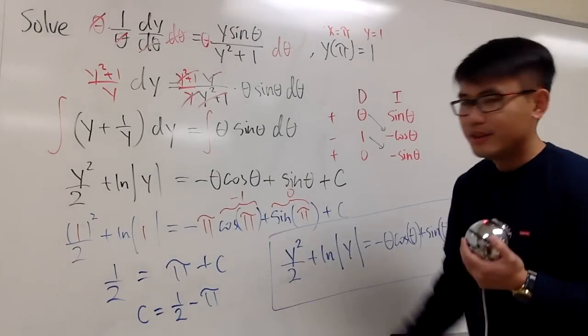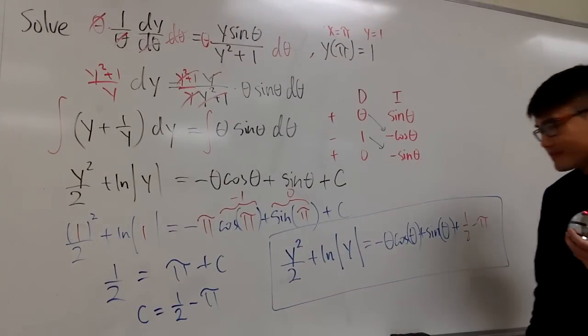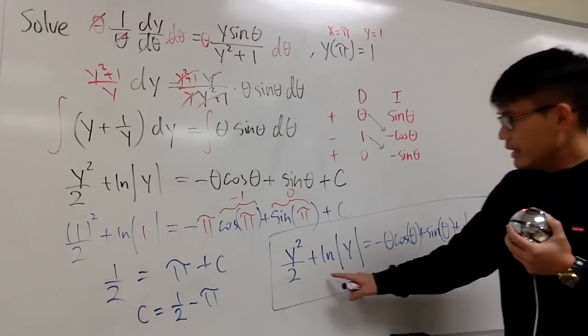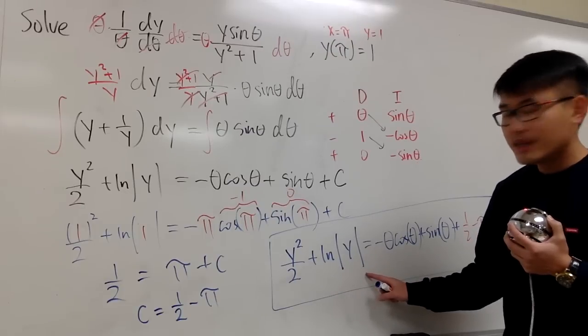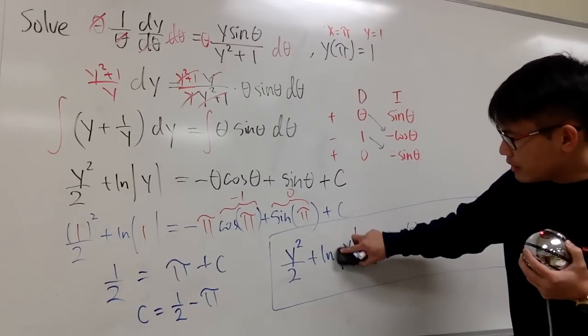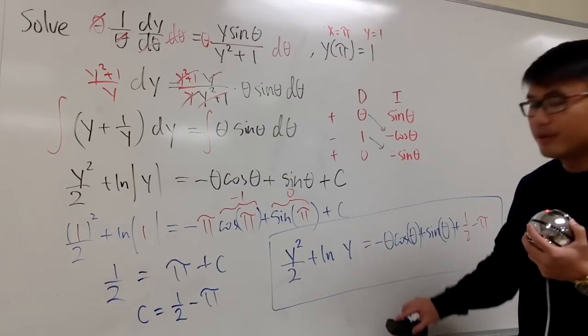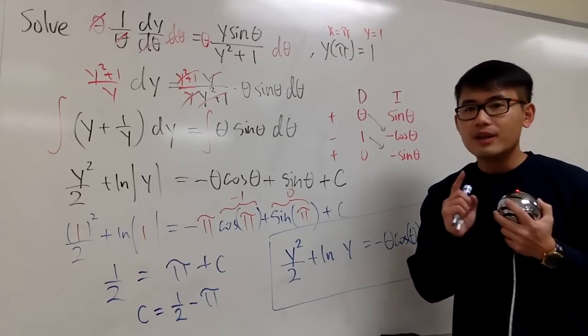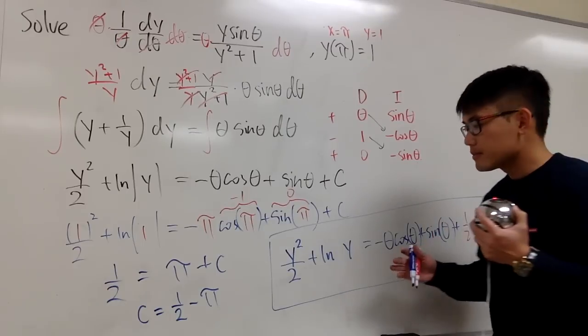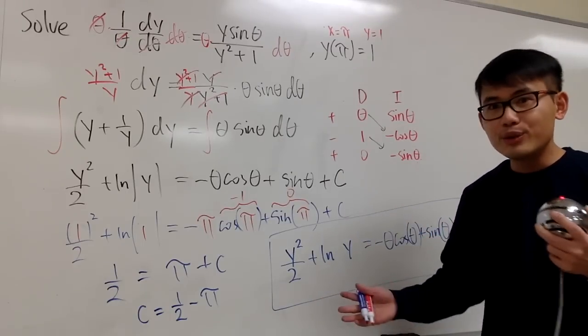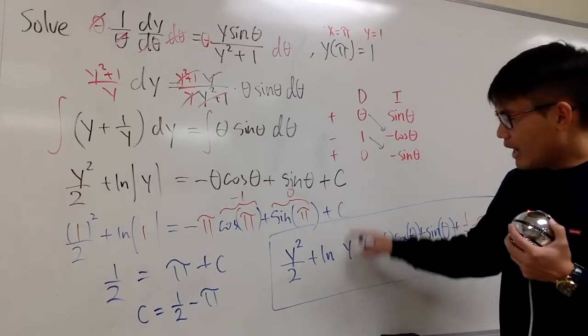However, I have one little thing I want to add, right here. Just one remark. Here we have ln of y with the absolute value, right? But in fact, we can drop the absolute value. Because when you have a solution to the differential equation, you have to make sure that the function is continuous. If you have the absolute value, in fact, it's not continuous.